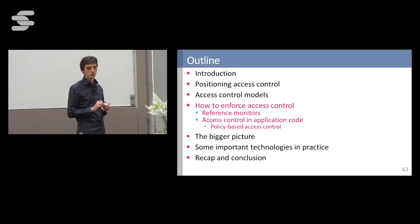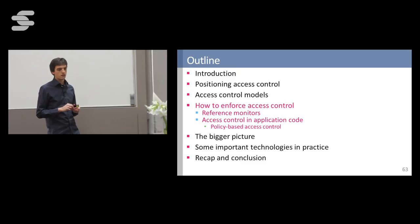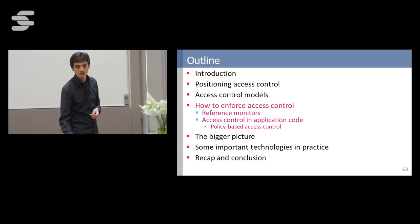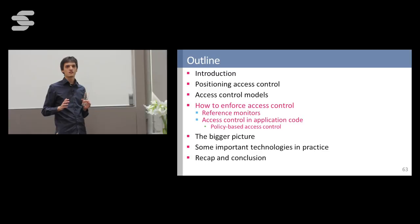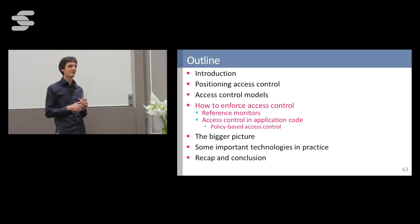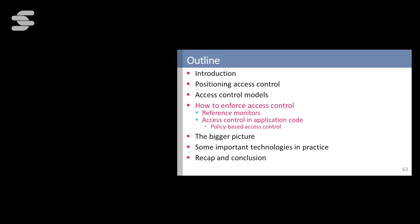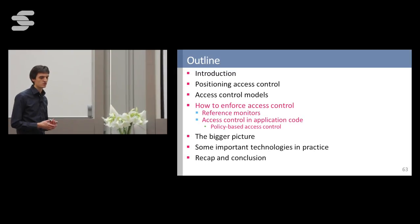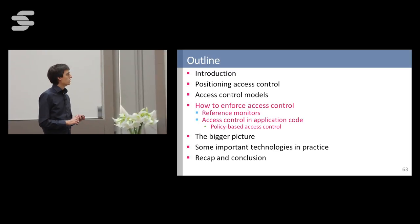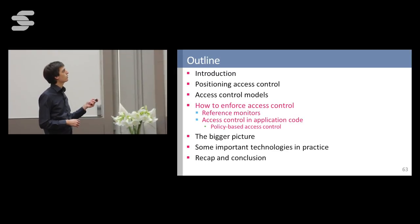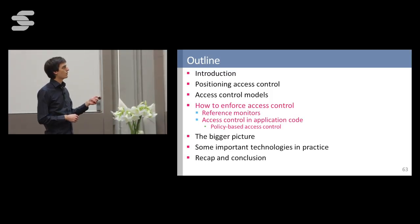That's a thorough overview of access control models. In the second part of this presentation, I want to focus on how you can actually enforce access control if you're a developer or a vendor of an application — how to implement it in application code. To come back to the original picture, enforcing access control comes down to two questions: how and where to implement the guard, and secondly, how to encode the access rules in this guard.